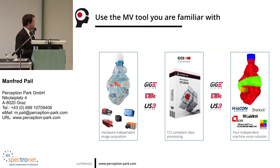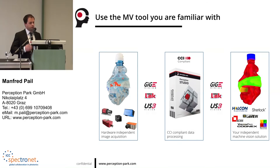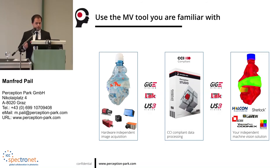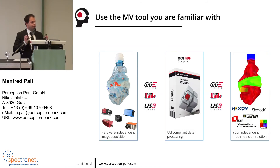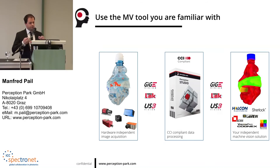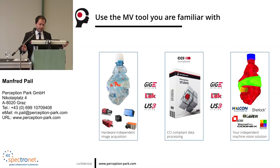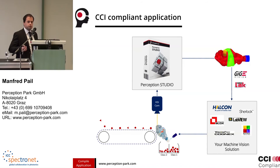How to apply it? Take any hyperspectral camera, connect it via standard interfaces with our Perception Studio, design your application, and then you get chemical color images. You can use the image processing tools you are already familiar with to process these data. Applying that for a real-time application could look like sorting plastic bottles on a conveyor belt.